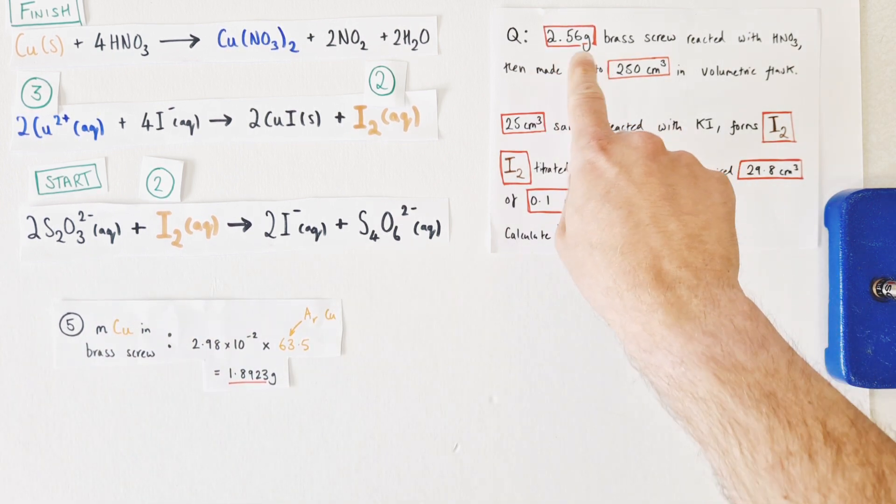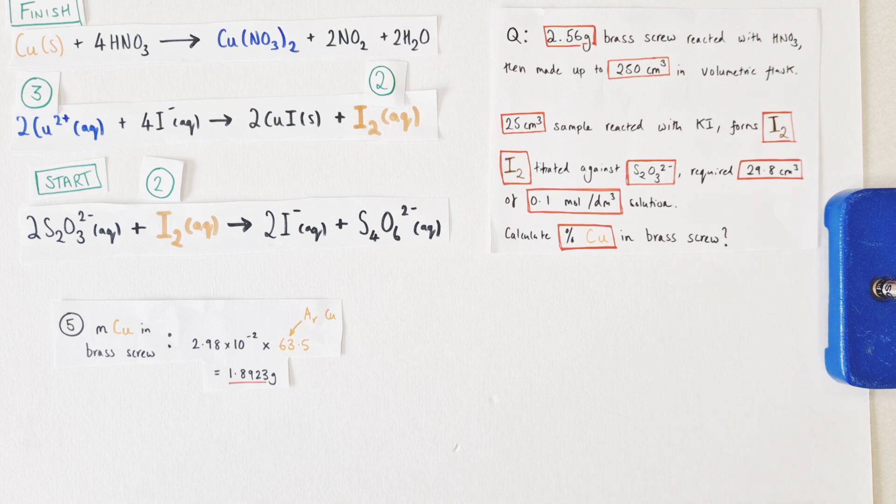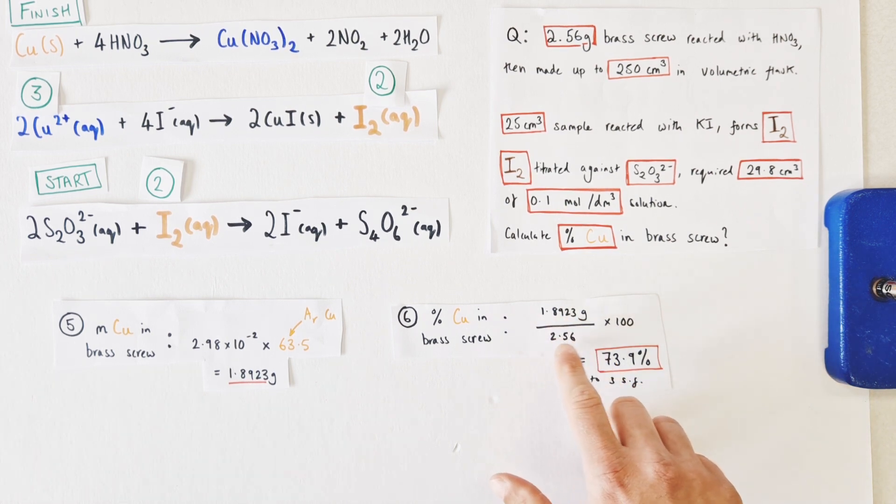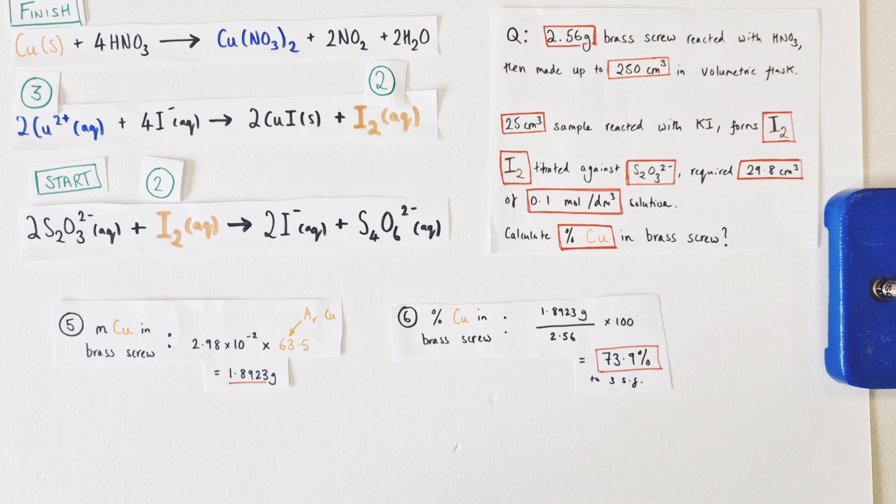The actual mass of the entire brass nail, the alloy of copper and zinc together, is 2.56 grams. So to work out the percentage by mass or the percentage composition of the brass screw that is actually copper, if we divide the mass of the copper by the mass of the whole brass screw and multiply by 100 to convert to a percentage, we find that it's about 63.9% of the mass of the brass screw was comprised of the copper in terms of content.